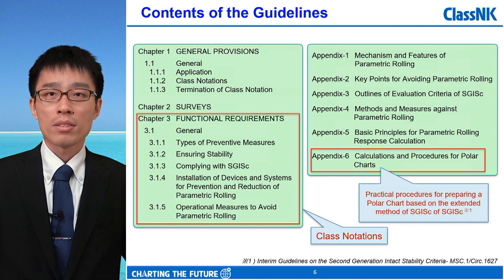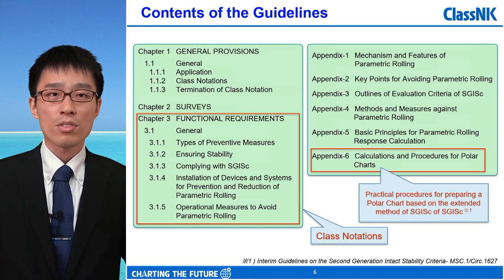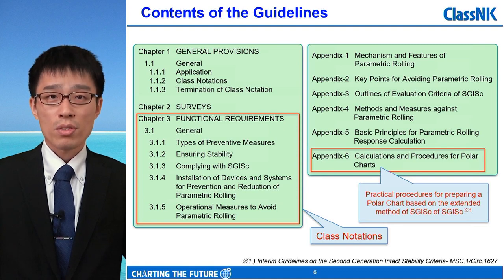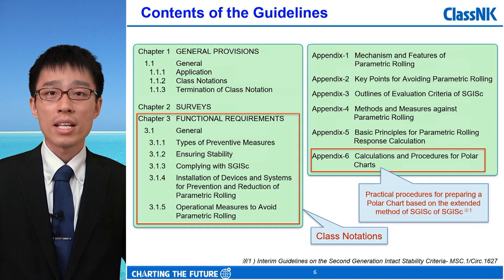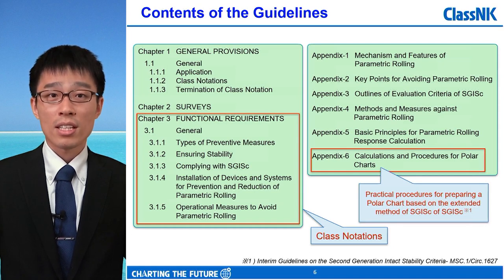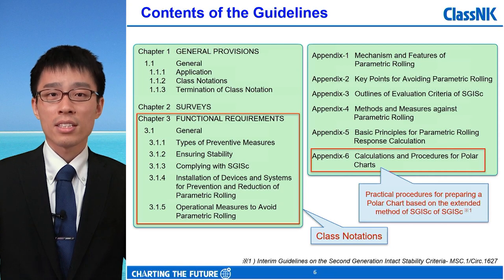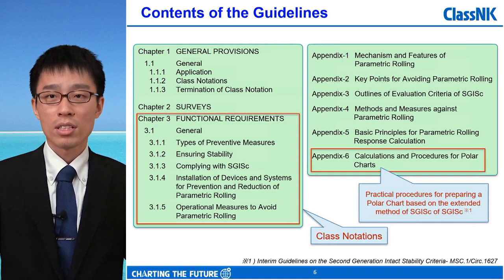This slide shows the outlines of the guidelines. Functional requirements in Chapter 3 specify class notation according to various preventive measures such as anti-rolling devices and operational guidance including polar charts. A detailed technical background of parametric rolling is provided in the appendix of the guidelines. A special Appendix 6 presents the practical procedure for preparing a polar chart based on the extended method of SGISC proposed by Professor Umeda, who is a leading expert in the field of stability. SGISC means interim guidelines on the second generation intact stability criteria by IMO in 2020 for preventing dynamic stability failure modes not covered by the existing intact stability code. This method can provide a polar chart for any sea state and any loading condition at relatively low cost.